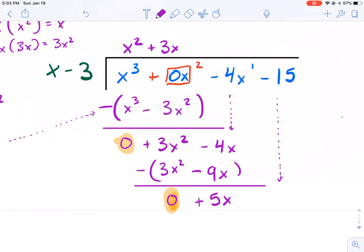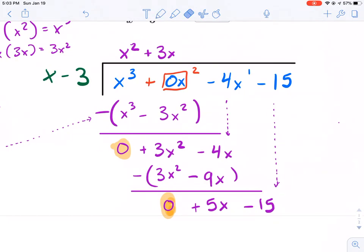Now we have negative 4x minus a negative 9x, that gives us a positive 5x. Be very careful with your subtraction and with the parentheses and the negatives - that's common mistakes that people do. Once you're done, you're going to drop down the next term in line. In this case it's minus 15.